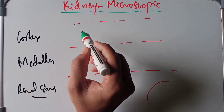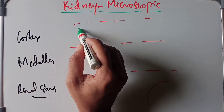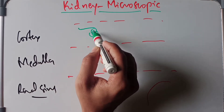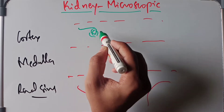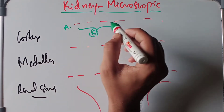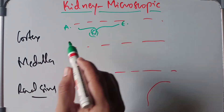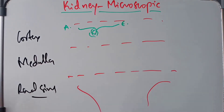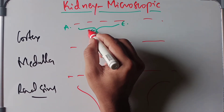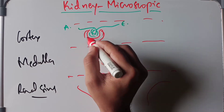In the cortex, the arterial supply will come from the afferent arteriole, and then it will divide into numerous branches forming capillaries, and then it will leave as the efferent arteriole. This is the afferent arteriole, this is the efferent arteriole, and this forms the glomerulus. So the glomerulus is formed in the cortex of the kidney, and outlining the glomerulus we have the Bowman's capsule.